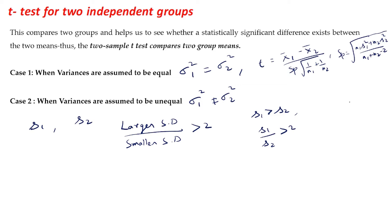Or if s2 is greater than s1, then the larger standard deviation is s2, so we take s2 by s1. If this ratio is more than 2, then we assume the variances are unequal.